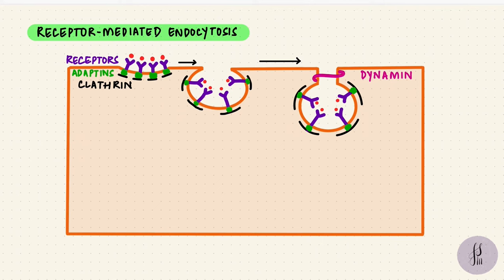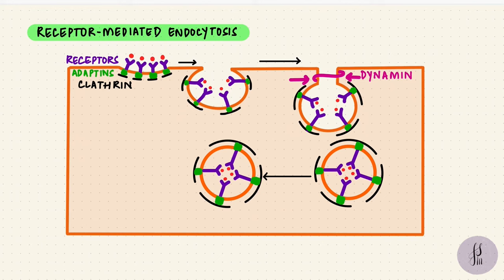It's a GTPase, so it uses GTP and helps pinch the vesicle off the membrane. This vesicle then loses its clathrin coat, so that's uncoating, which is done by an uncoating ATPase. So it uses ATP to remove the coat. And the clathrin can be used to form another vesicle.